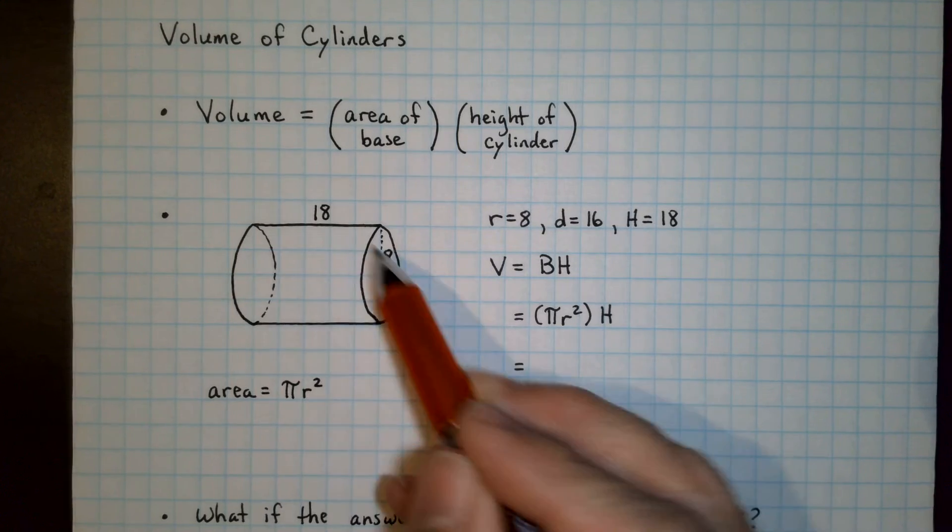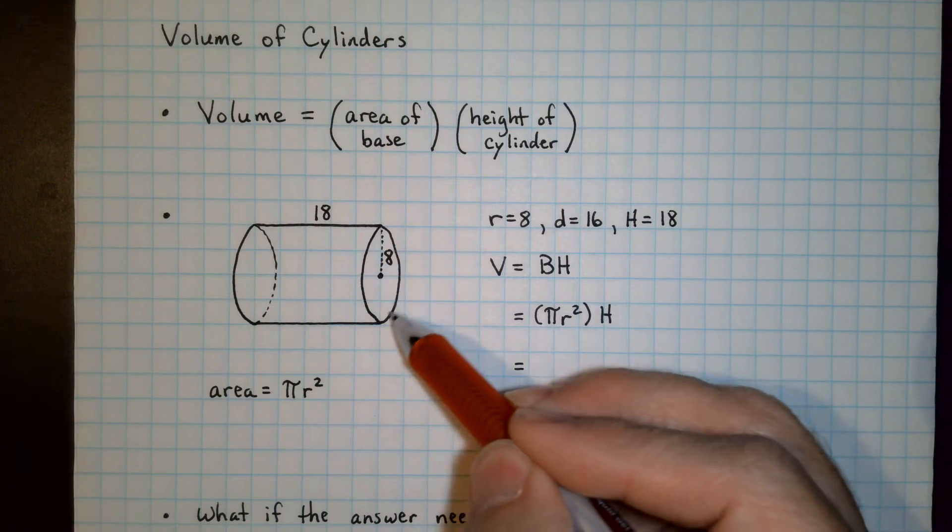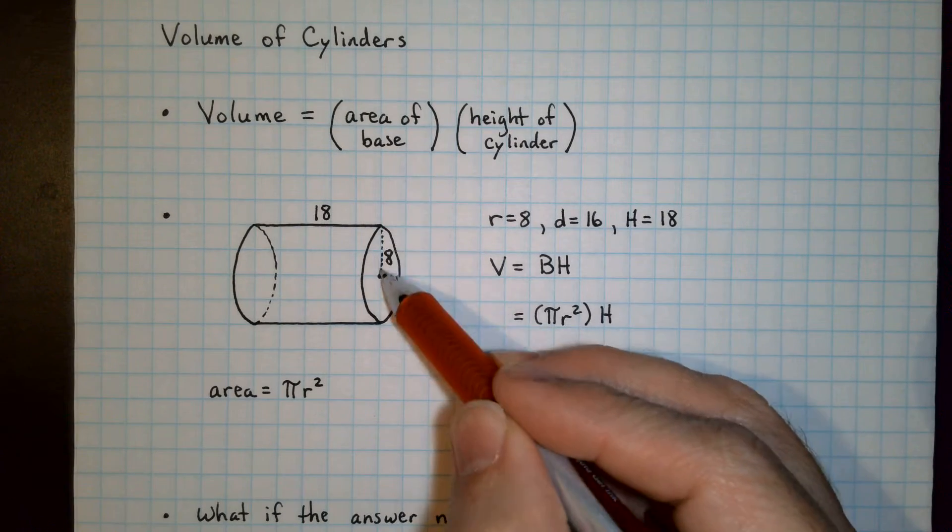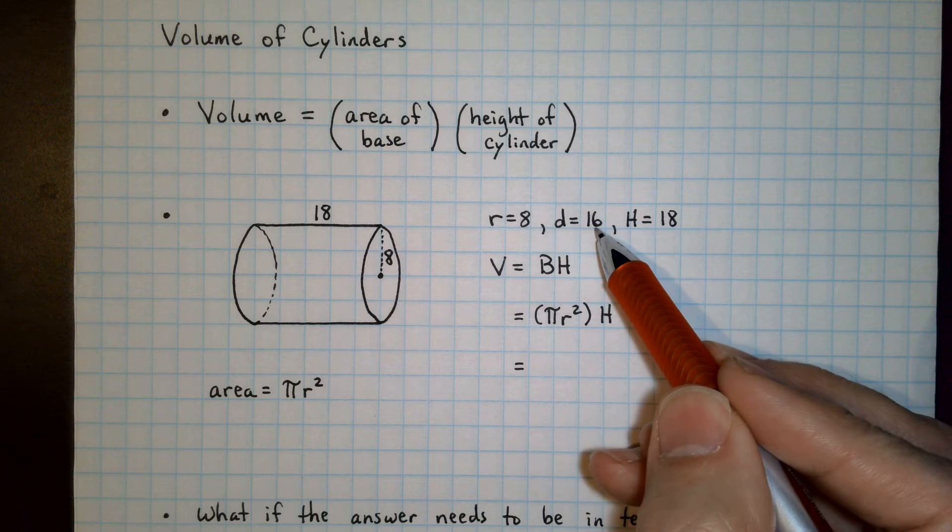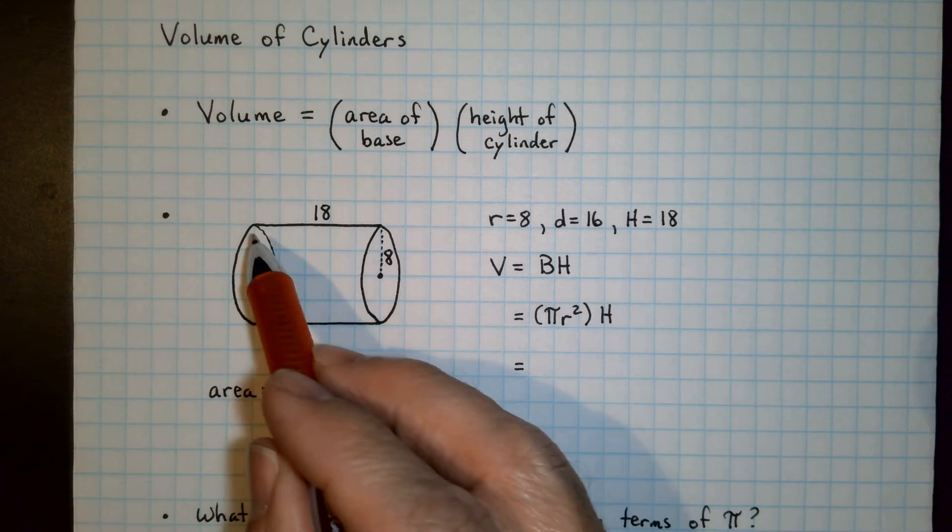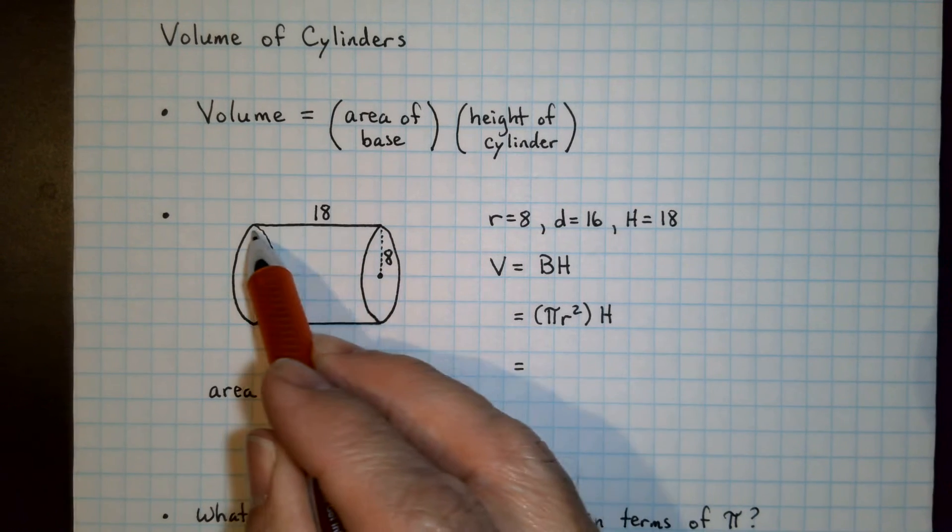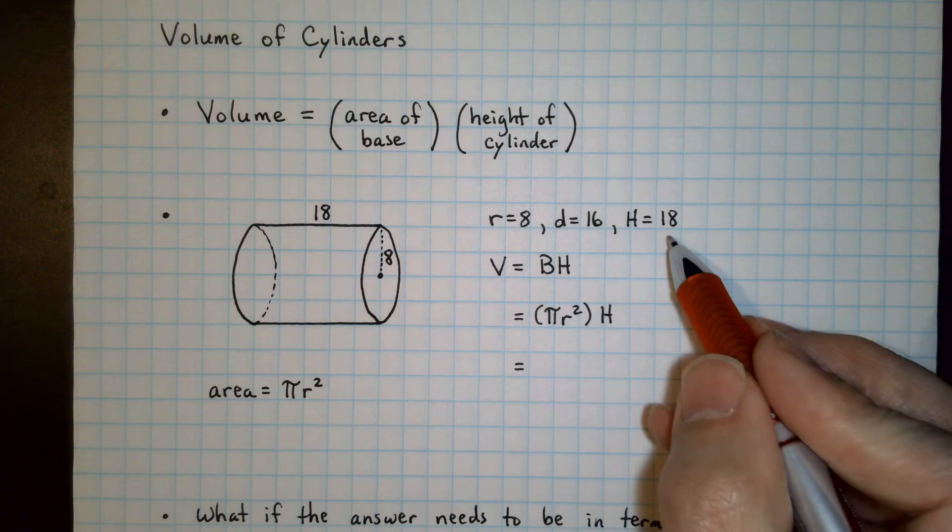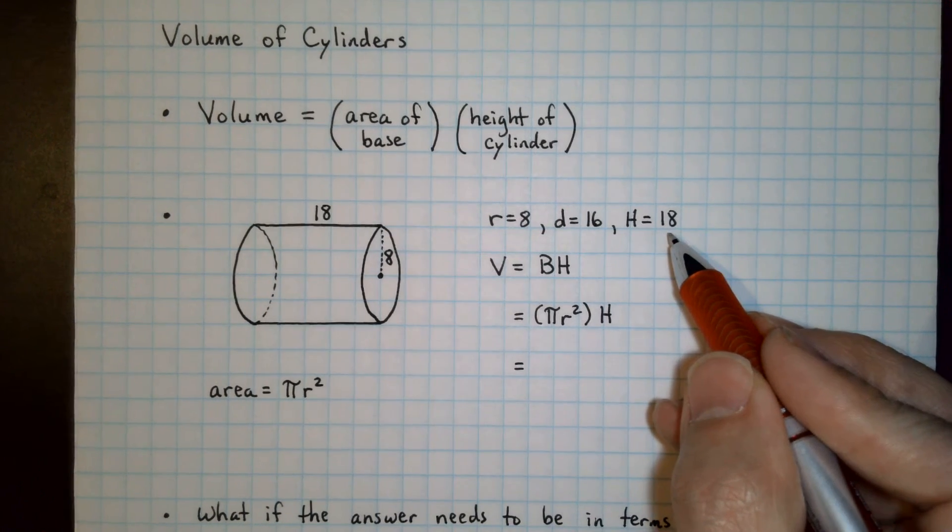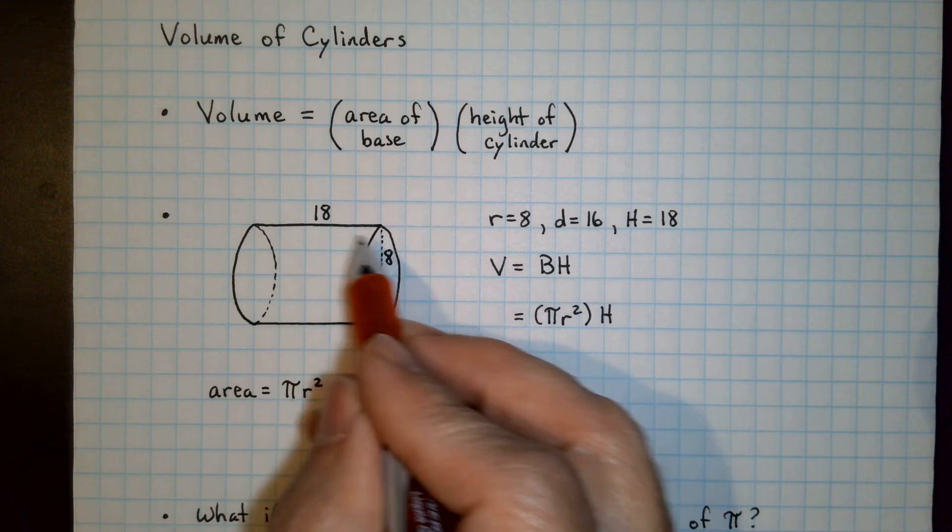In this case, we see our cylinder here. This circular base has a radius of 8, which means the diameter would be 16 if we needed that. And the distance between the circular bases is 18, so that represents the height of the cylinder, even though it's turned sideways.